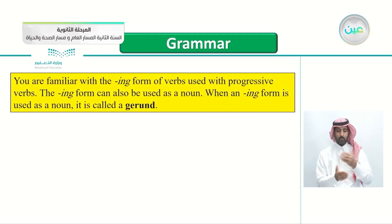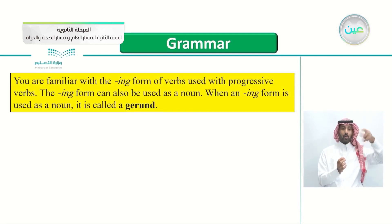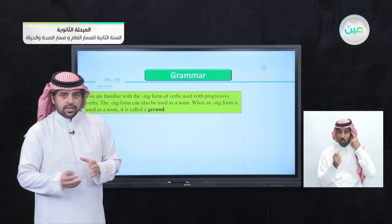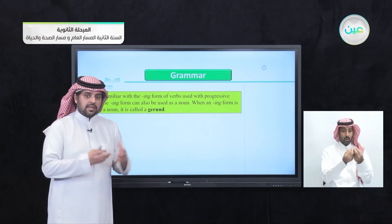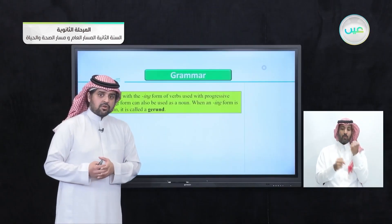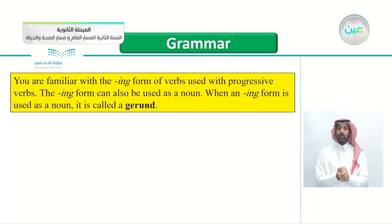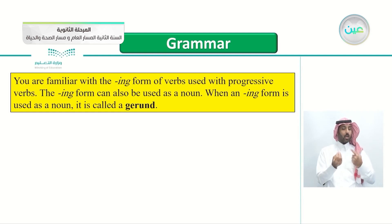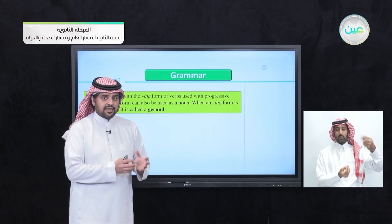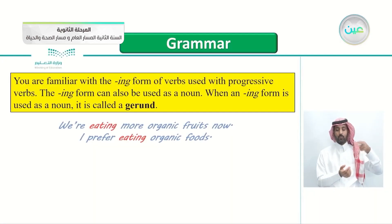Let's jump to the lesson. Of course you are familiar with the ing form of verbs in the progressive form — coming, going, sleeping, studying and so on. The ing form can also be used as a noun; it's not necessarily a verb. When an ing form is used as a noun, it is called a gerund.